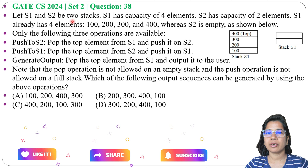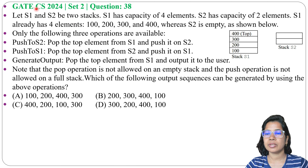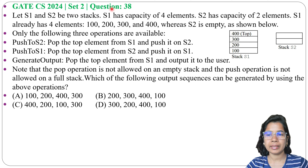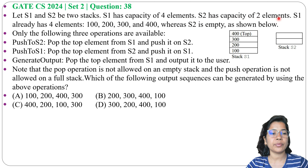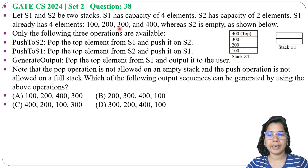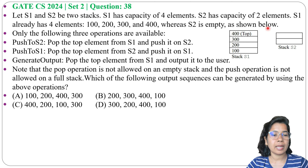Let's solve a previous question on stacks. This question was asked in GATE CS 2024, Set 2, Question Number 38. Let S1 and S2 be two stacks. S1 has a capacity of 4 elements and S2 has a capacity of 2 elements. S1 already has 4 elements: 100, 200, 300, and 400, whereas S2 is empty, as shown below.